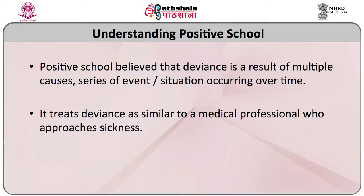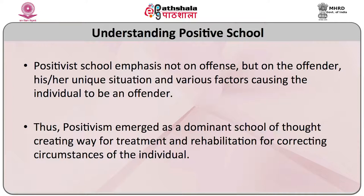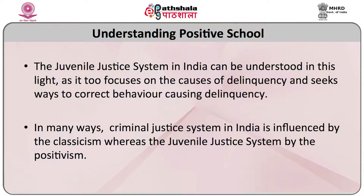The positive school believed that deviance is a result of multiple causes — a series of events or situations occurring over a period of time. It treats deviance similarly to how a medical profession approaches sickness, emphasizing not on the offence but on the offender, his or her unique situation and various factors causing the individual to be an offender. Thus the positive school emerged as a dominant school of thought creating the way for treatment and rehabilitation. The juvenile justice system in India can be understood in this light, focusing on causes of delinquency. In many ways, the criminal justice system in India is influenced by classicism whereas the juvenile justice system is influenced by positivism.